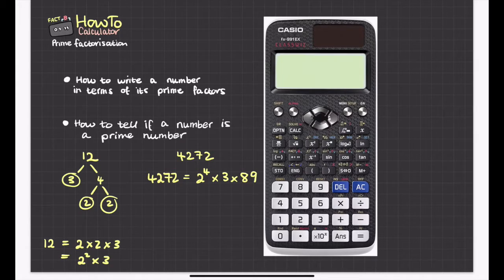Now, if I do this and I just end up with the number that I had, then that means that you had a prime number. So, for example, let's try this with the number 4,273. So I'm going to type it into my calculator. 4,273 equals.